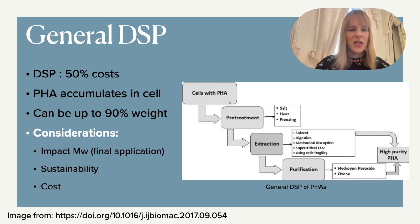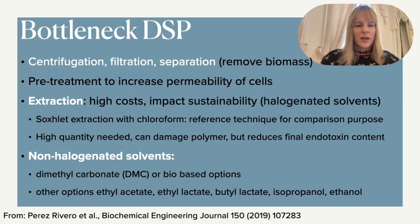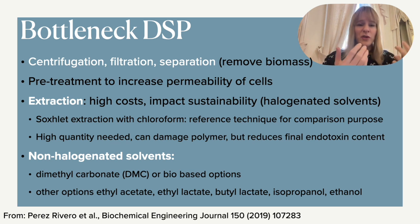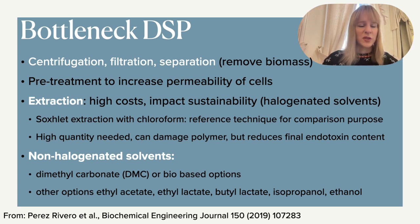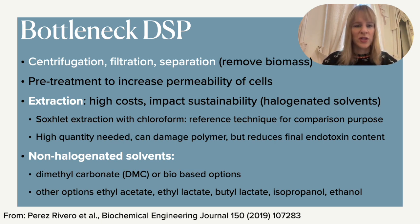I'll go into the details on sustainability, focusing mainly on the extraction process with some cost suggestions. The key first step is getting the PHA out of the cells — but before that, you need to remove the biomass using techniques like centrifugation, filtration, and separation. Then there is a pre-treatment of the cells to simplify the extraction step. The bottleneck at the moment is the extraction process, due to high costs, but also — often overlooked — its impact on sustainability. Since we are dealing with a bioplastic, the common use of halogenated solvents in this step doesn't align with the sustainability idea.